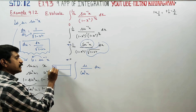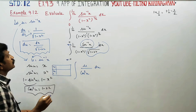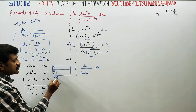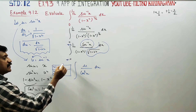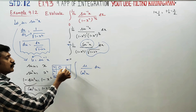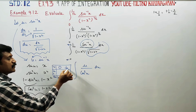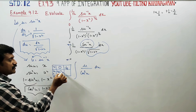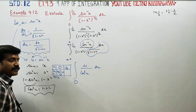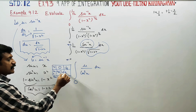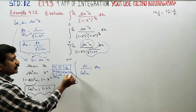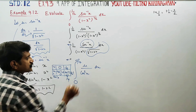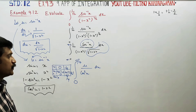Now we change the limits. When x equals 0, u equals sin⁻¹(0) which is 0. When x equals 1/√2, u equals sin⁻¹(1/√2) which is 45 degrees, that is π/4. So the new limits are 0 to π/4.